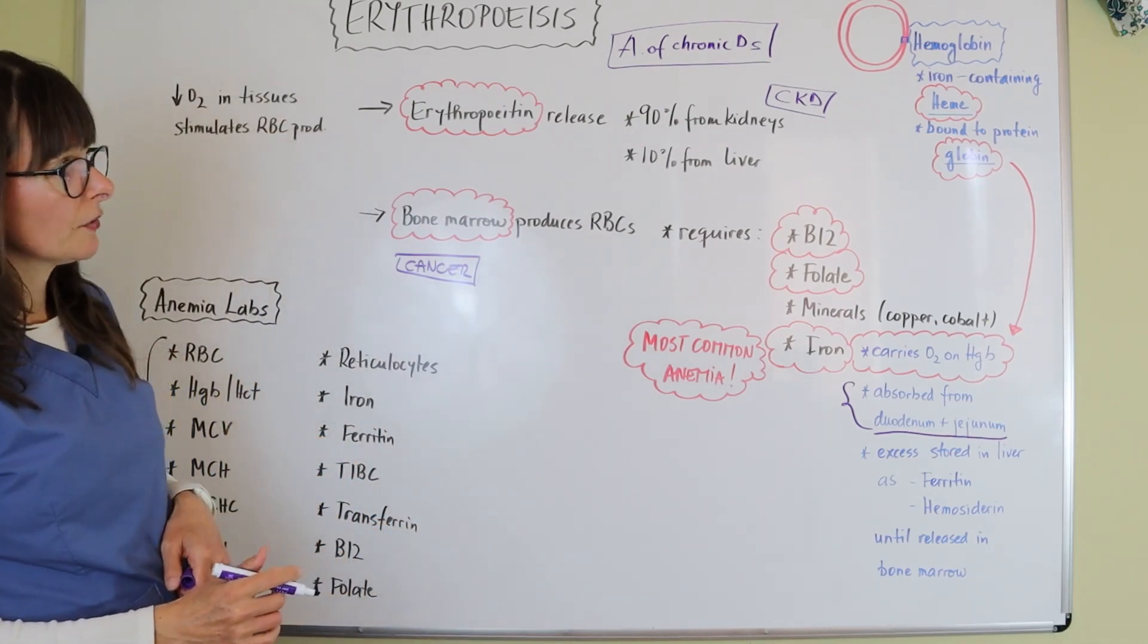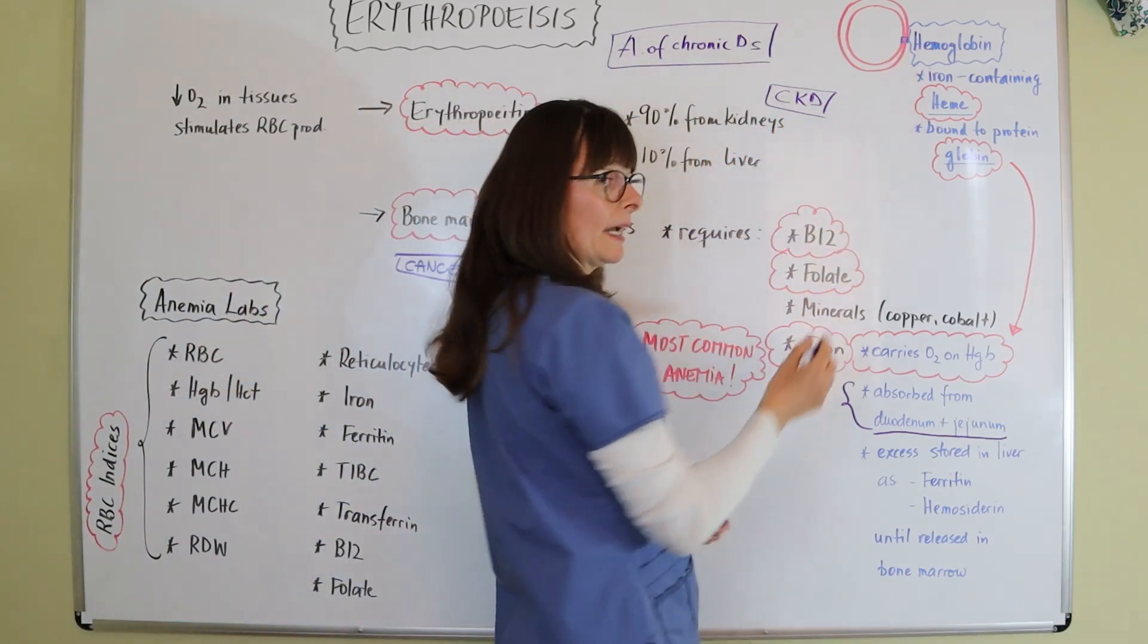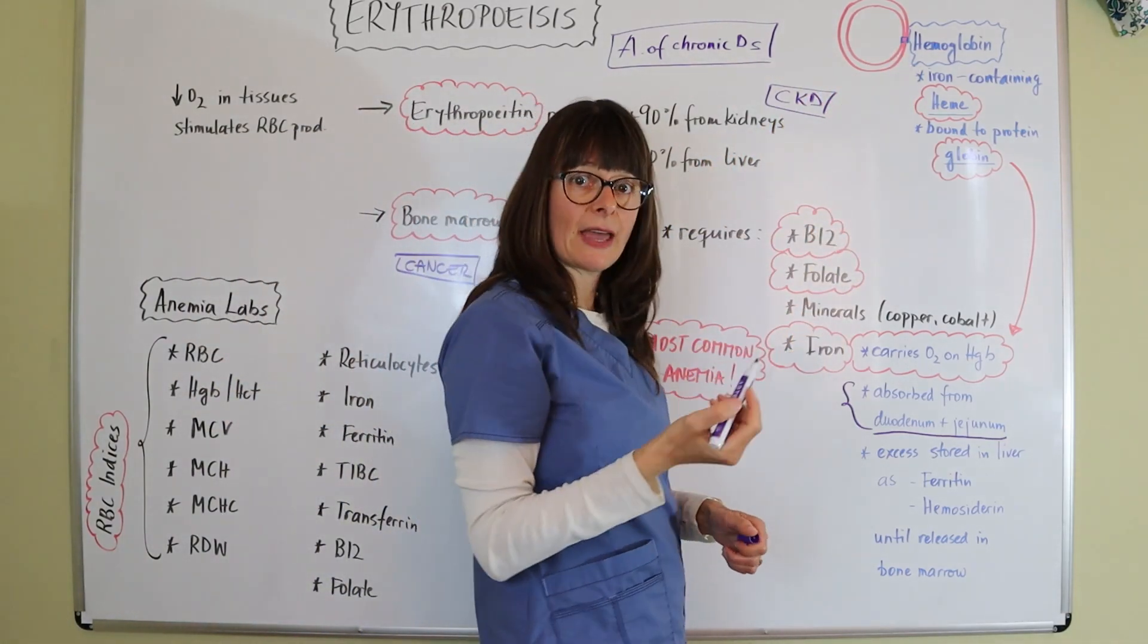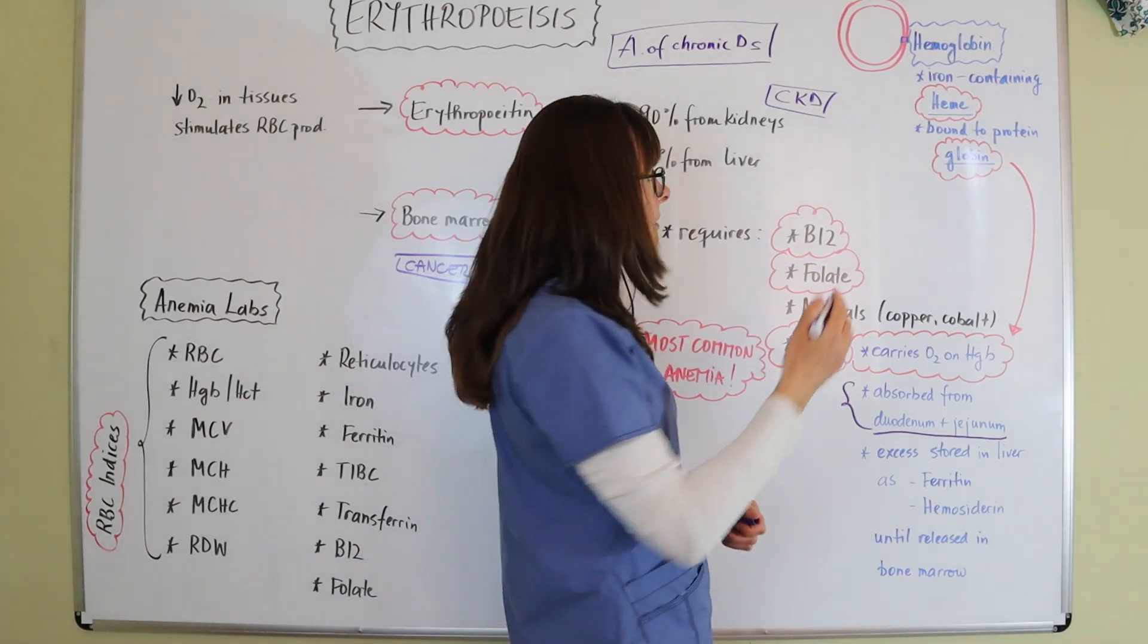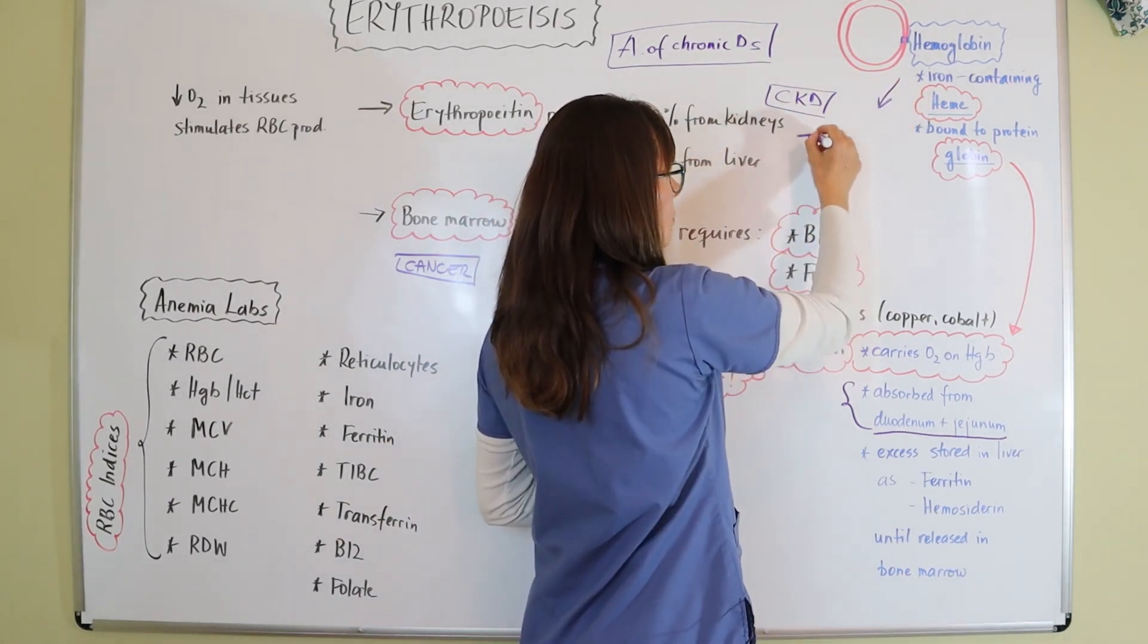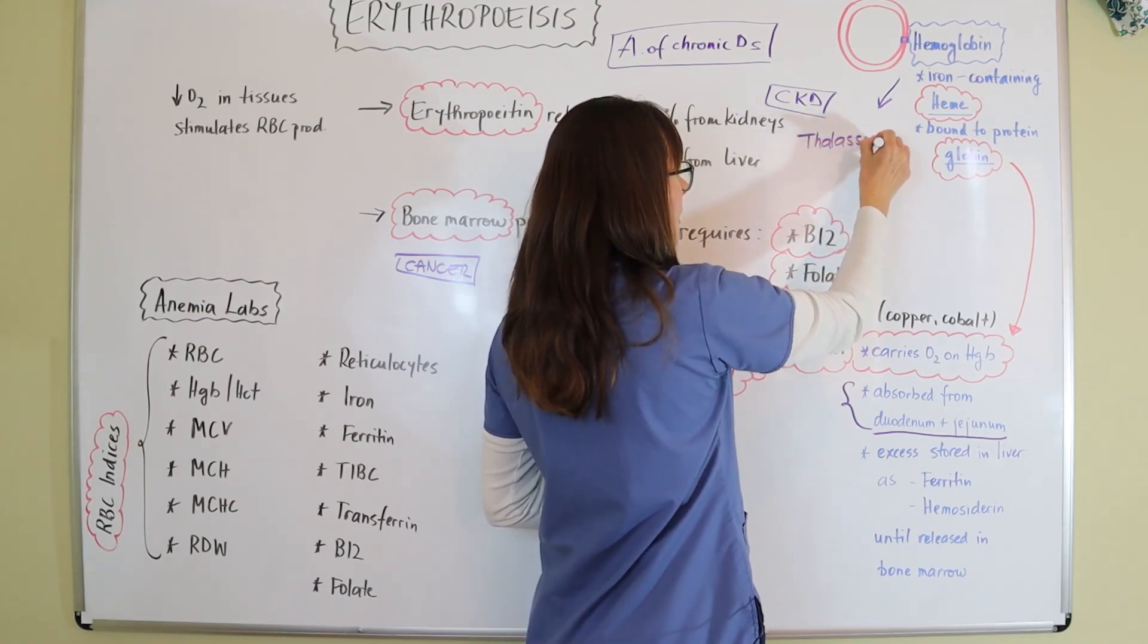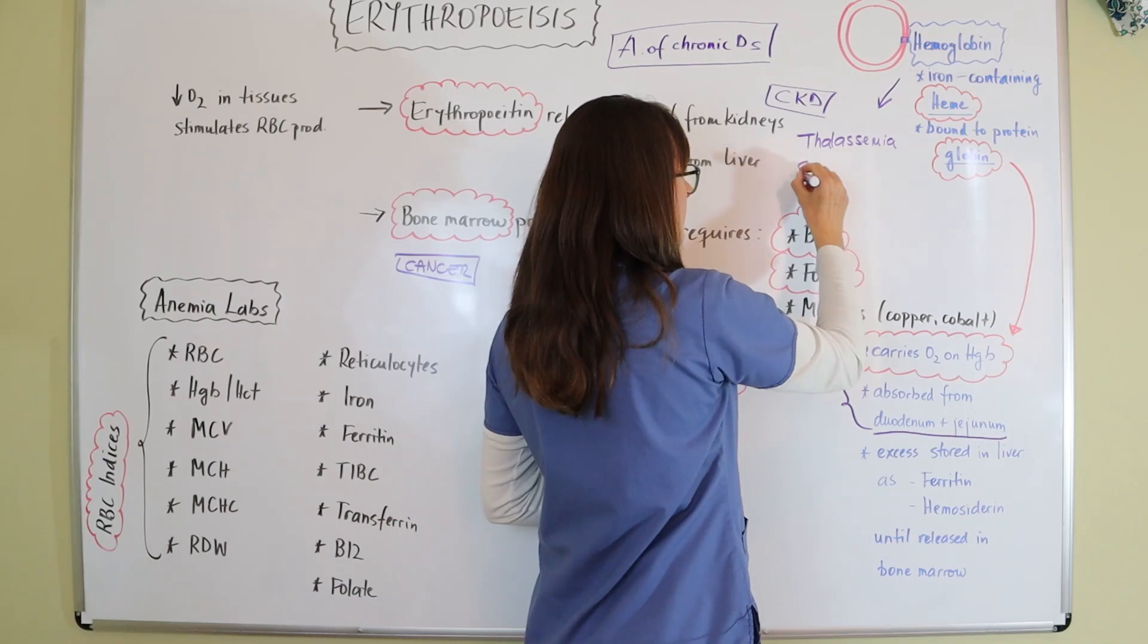Now, the other thing that can happen, the hemoglobin itself can have some issues. And that is mostly because of genetic disorders. The two here that pertain to the hemoglobin are thalassemia and sickle cell disease.